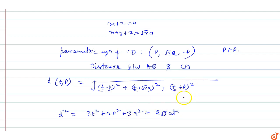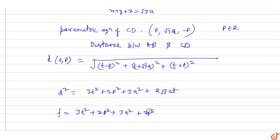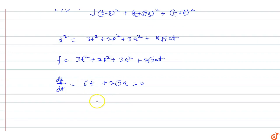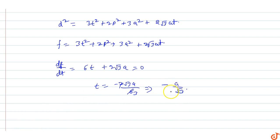To minimize d², we differentiate with respect to t and p and set equal to zero. Solving gives t = -2√3a/6 = -a/√3, and p = 0. So the minimum value is attained at t = -a/√3 and p = 0.